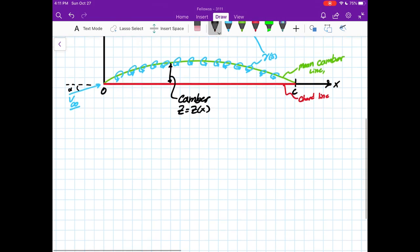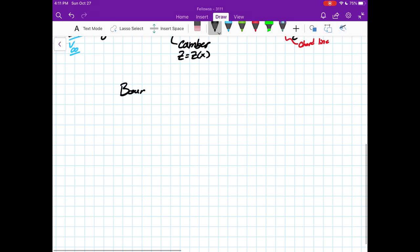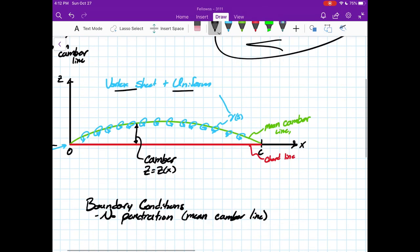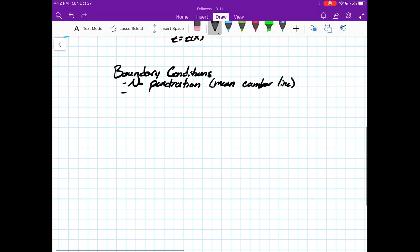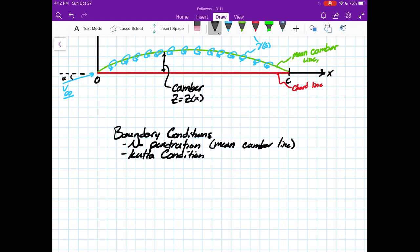And I talked about this a little bit in our Kutta condition video, but essentially, I'll put them again here, there's a little more detail in that other video, but boundary conditions are no penetration, and for us this is no penetration of the mean camber line. And then also, of course, we have the Kutta condition, which I talked about in more detail in our Kutta condition video.